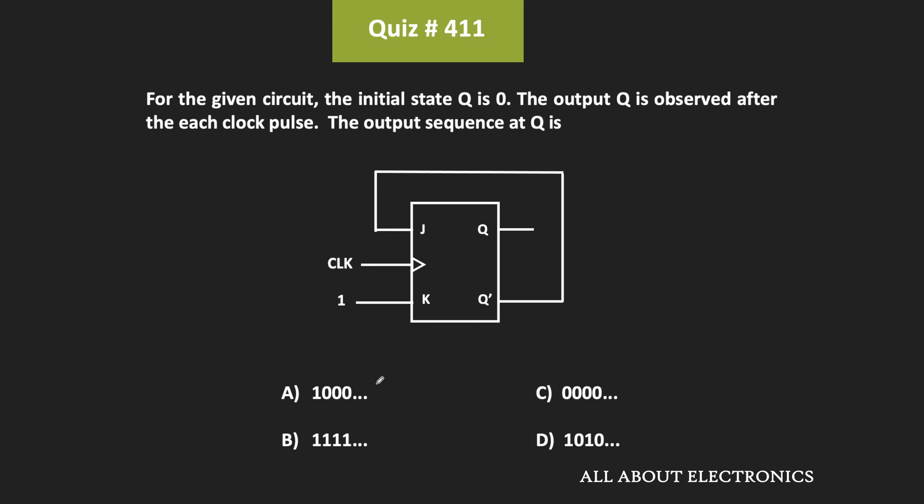So in this circuit, the initial state Q is equal to 0. And at every clock pulse, this Q output is observed. So here, we have been asked to find the output sequence at the Q output.